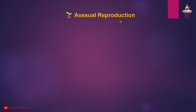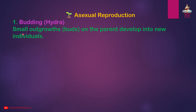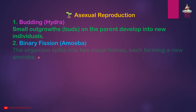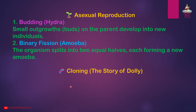Asexual reproduction methods: Budding — in Hydra, small outgrowths called buds on the parent develop into new individuals. Binary fission — the organism splits into two equal halves, each forming a new individual, as seen in amoeba.